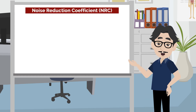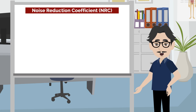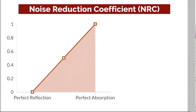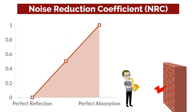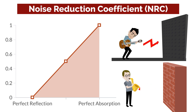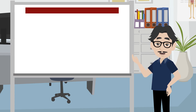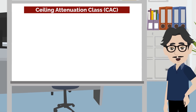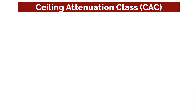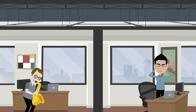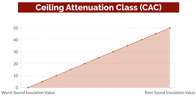Sound absorption is measured in noise reduction coefficient, or NRC. The higher the NRC value, the better absorption qualities are in the material. An NRC of 0 indicates perfect reflection and an NRC of 1 indicates perfect absorption. Another method of measuring the sound reduction qualities of acoustic ceiling tiles is its ceiling attenuation class, or CAC. This is a measurement of the ceiling tile's ability to block sound traveling through a plenum when the wall does not extend to the roof deck. The higher the CAC value, the better sound insulation values between rooms.